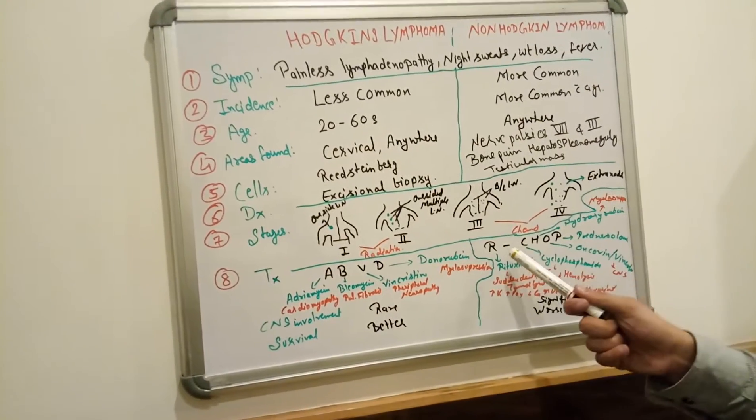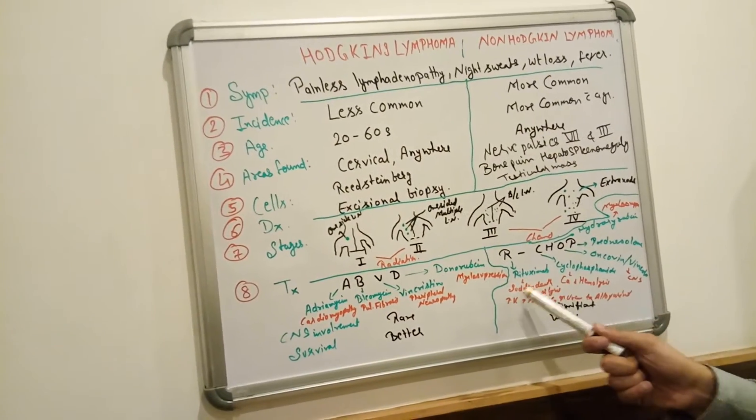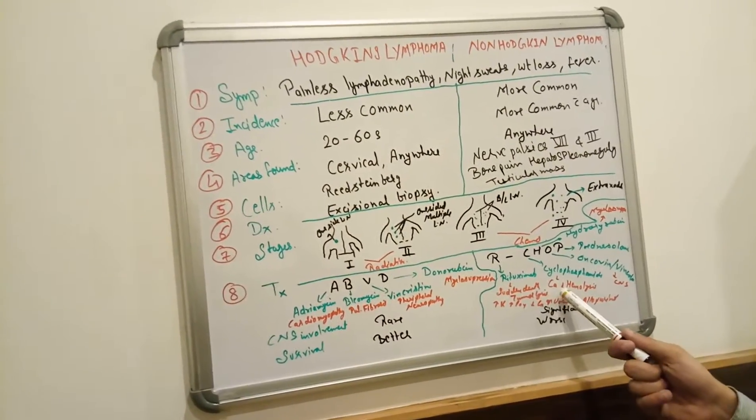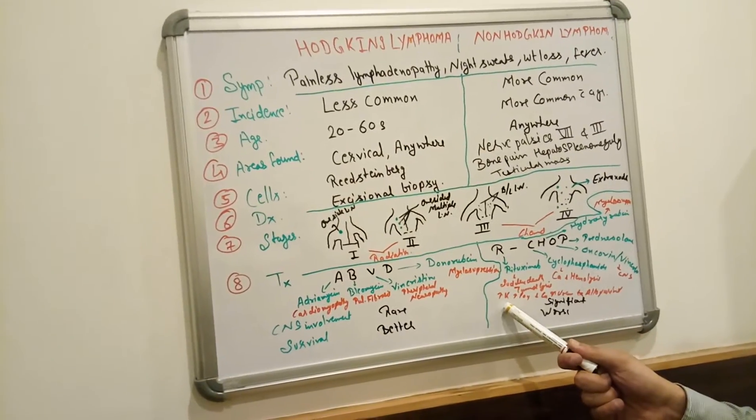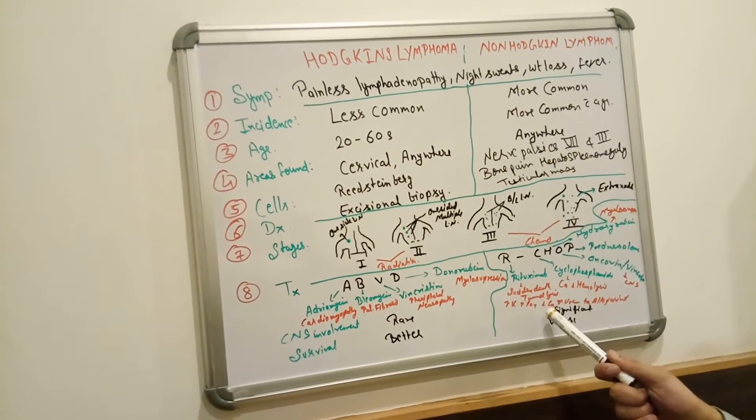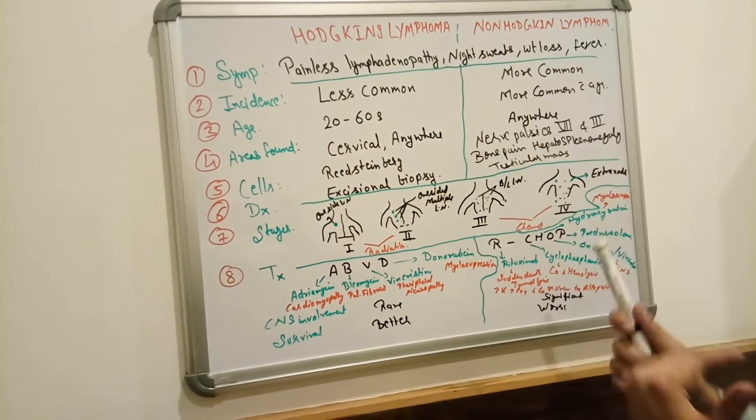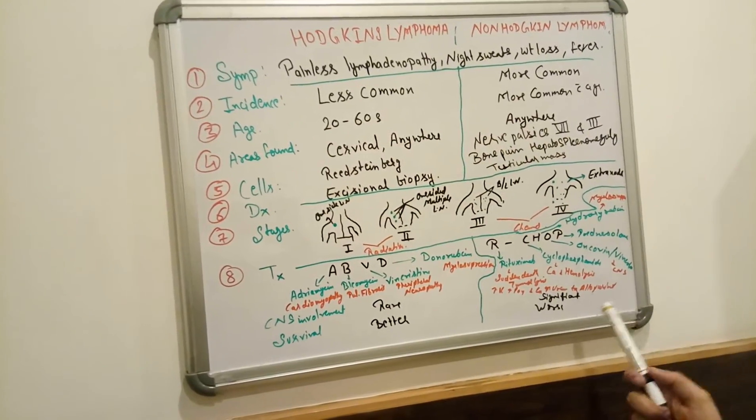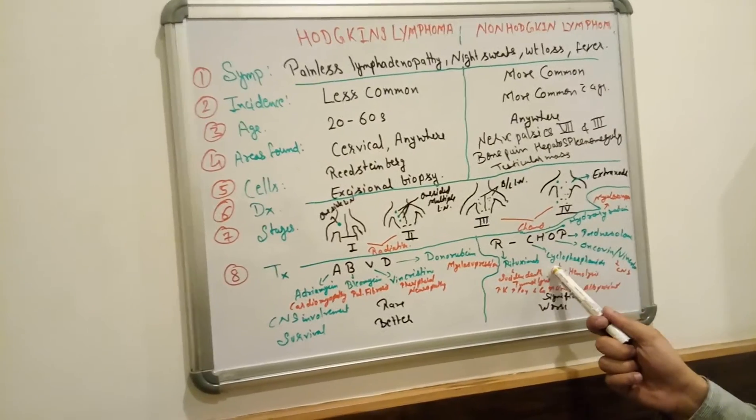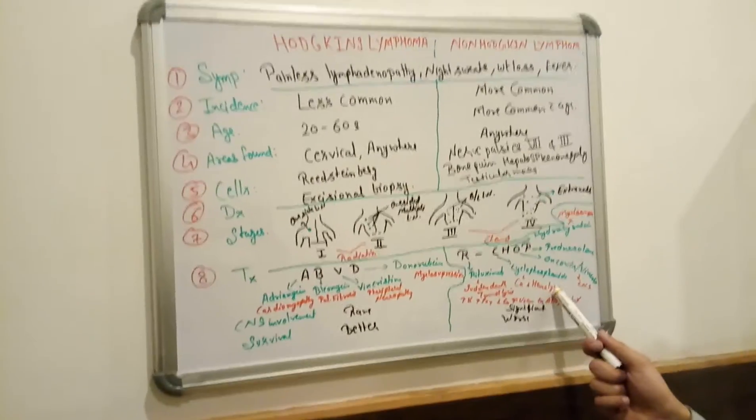And R-CHOP for non-Hodgkin lymphoma. R for Rituximab - Rituximab causes sudden death and tumor lysis syndrome, where potassium increase, phosphate increase, calcium increases, uric acid increases. So uric acid level increases is treated by allopurinol. C is Cyclophosphamide. Cyclophosphamide causes cancer, hemolysis.